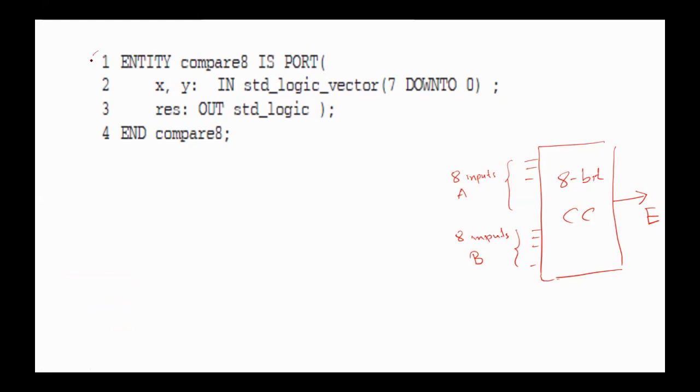The first line tells us what we are describing. In this case the name of the entity is compare8. The word PORT followed by parentheses tells us that the following information describes the I/O, the input-output behavior of the entity. Line 2 begins with the actual description of the inputs.